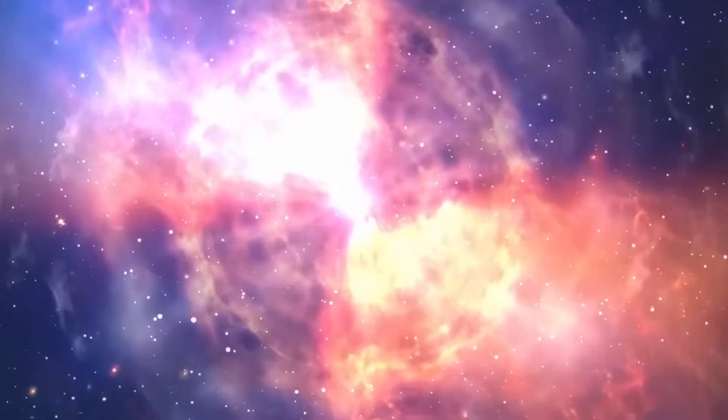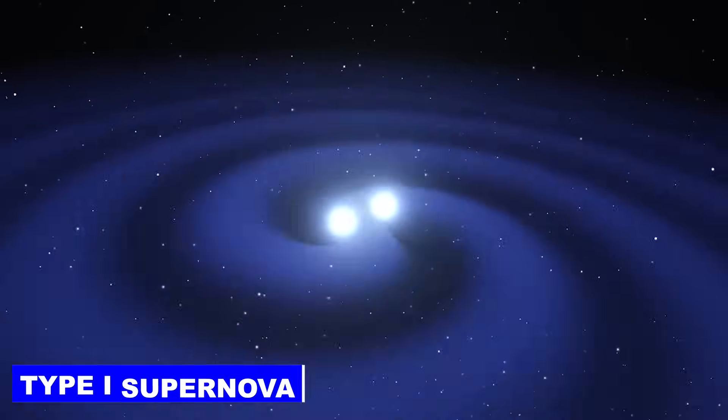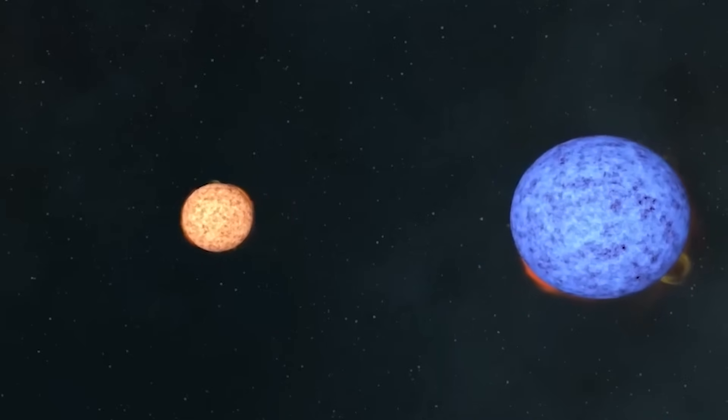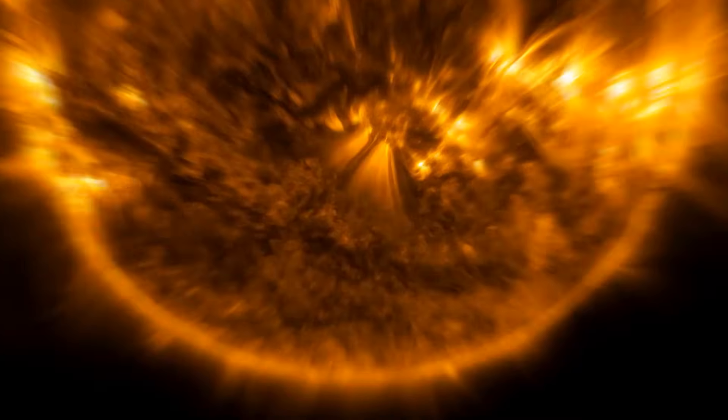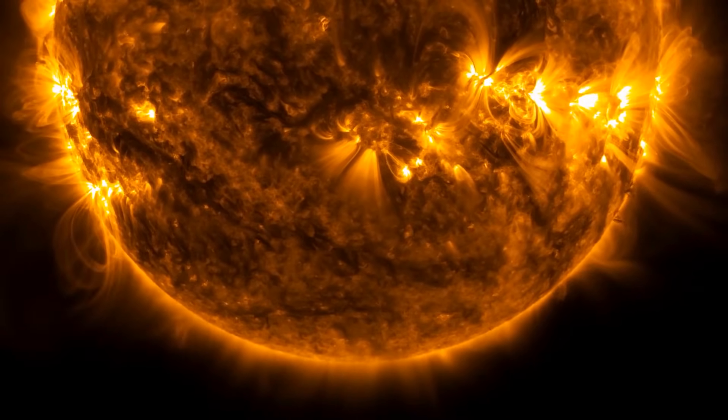There are two main categories of supernovae. The first, known as a Type I supernova, occurs in a binary star system, where a white dwarf accumulates too much mass from its companion, triggering an uncontrolled nuclear reaction. The second, a Type II supernova, is what we expect Betelgeuse to undergo.